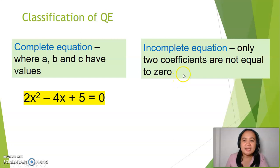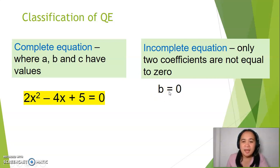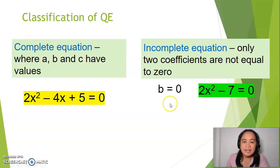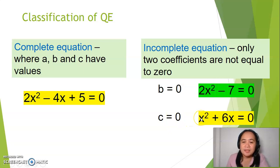There are two possible cases in this. The first one is when b is equal to 0, meaning the linear term is not present. An example is 2x squared minus 7 equals 0. The second case is when c is equal to 0, meaning the constant term is not present. An example is x squared plus 6x equals 0.